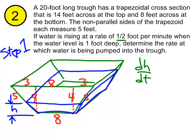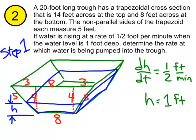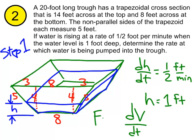The units are a clue — this is not cubic feet per minute, it's just feet per minute, so it's dh/dt. We're asked to answer a question when the water level is one foot deep, so at some point in time h equals 1 foot — we'll save that for step four. We're asked to find the rate at which water is being pumped into the trough. It's implied we want the volumetric rate, dV/dt. That is step one.